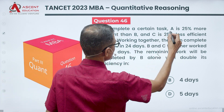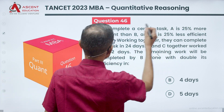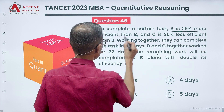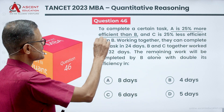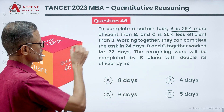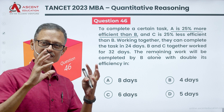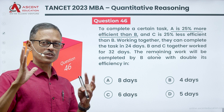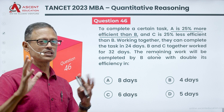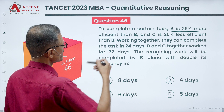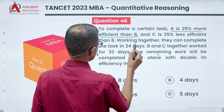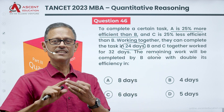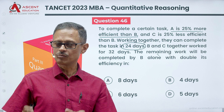To complete a certain task, A is 25% more efficient than B, and C is 25% less efficient than B. There is an inverse relationship between time and efficiency. Working together, A, B, and C can complete the task in 24 days.